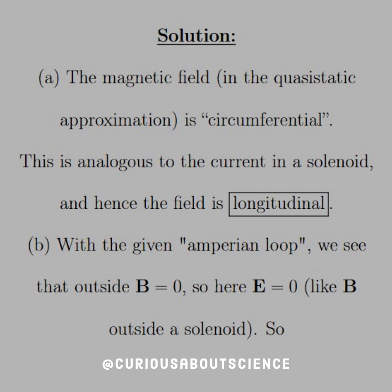But for part B, we need to now use this amperian loop. And using what we were told in the question, we see that B goes to 0 outside. So outside, we'll just go ahead and say that B is 0. So hence here, the induced field is 0, much like the field outside of the solenoid again.